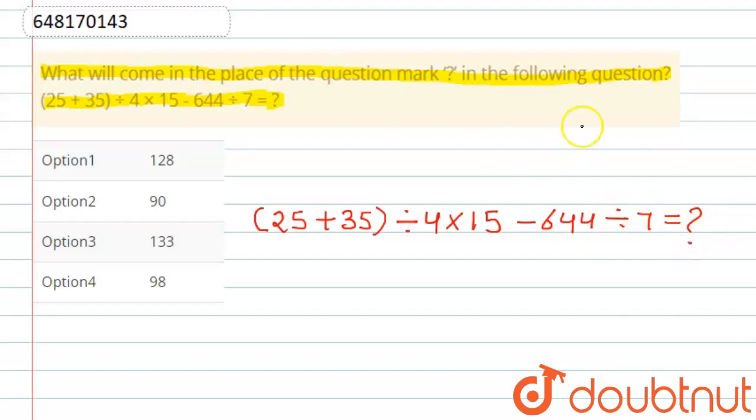Before we solve, we have to follow the BODMAS rule. That is: B-O-D-M-A-S. First Brackets, then O, then Division, then Multiplication, then Addition, then Subtraction.